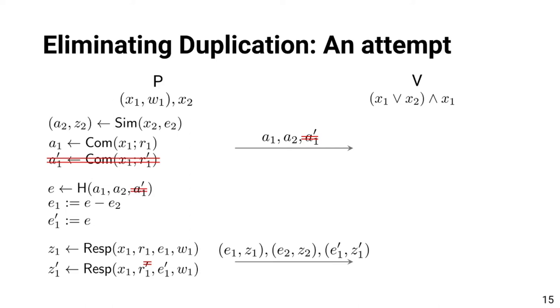We then consider eliminating the multiple executions of the sigma protocols on the duplicated statement. Suppose that we merge the first message for statement x1 into one. Since the challenge strings are generated according to the access structure, there are still two challenges to x1. So the prover answers to those challenges with the same first message. However, this constitutes two valid transcripts with the same first message and different challenges that reveals the witness. Such a risk is indeed pointed out in the literature that presents an efficient compiler for sigma protocols.